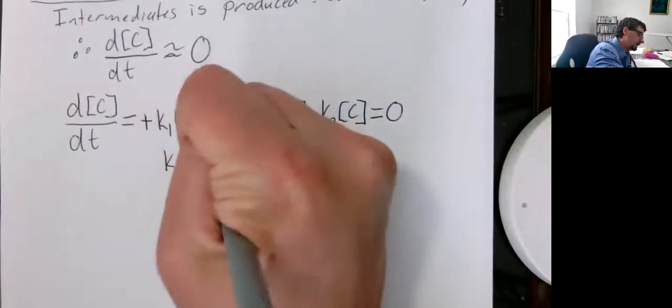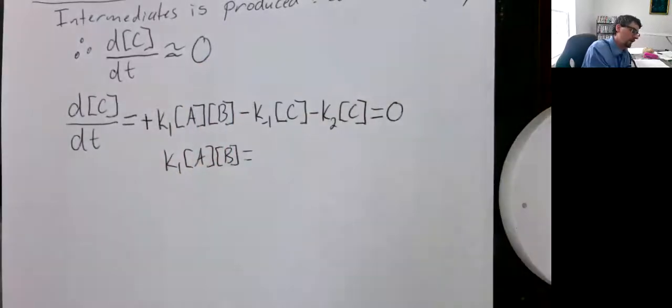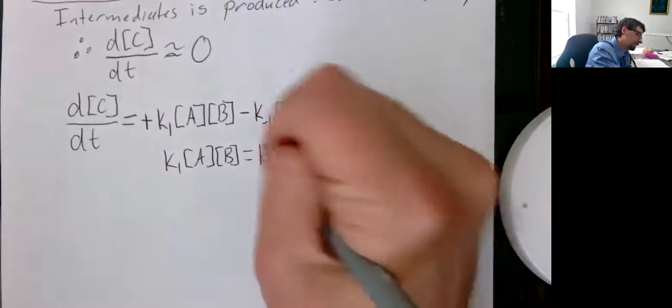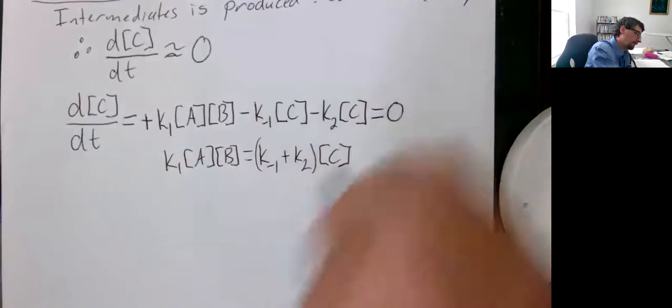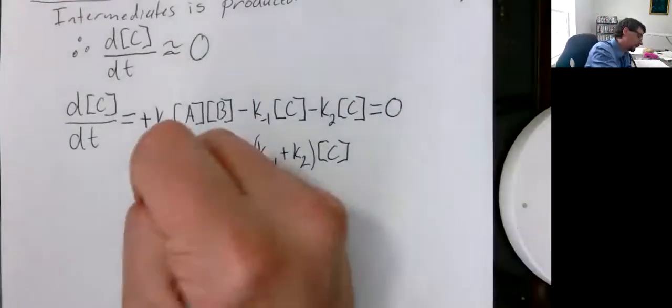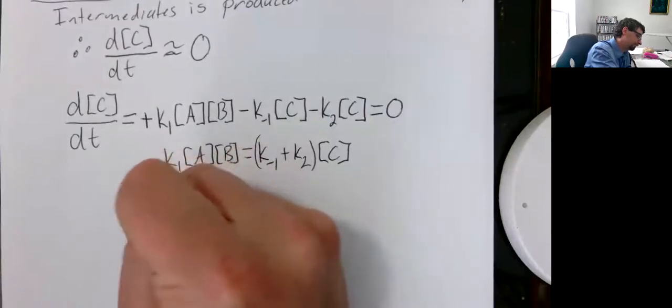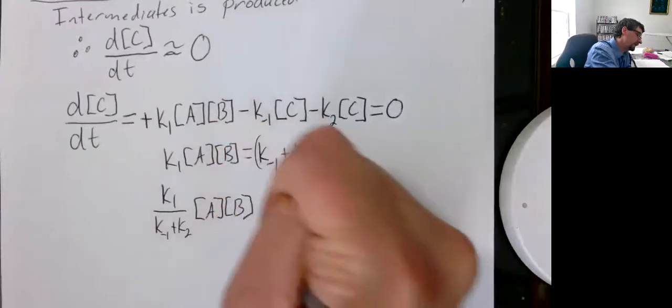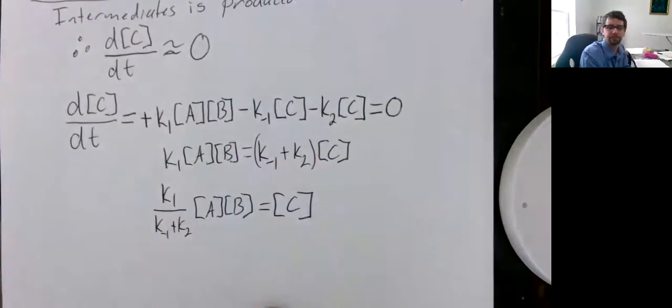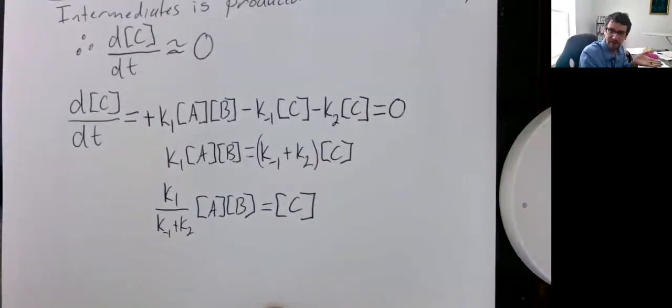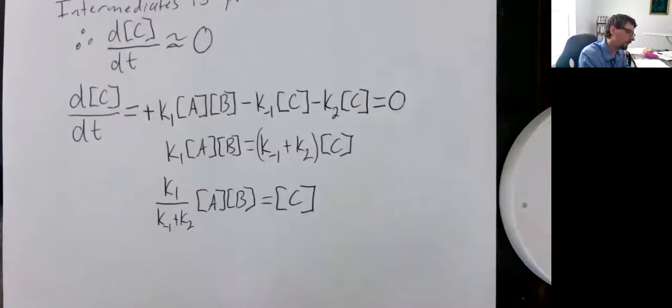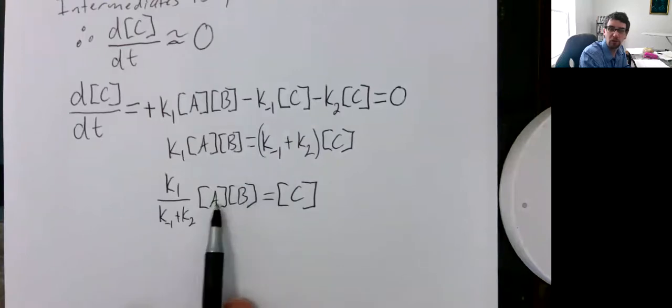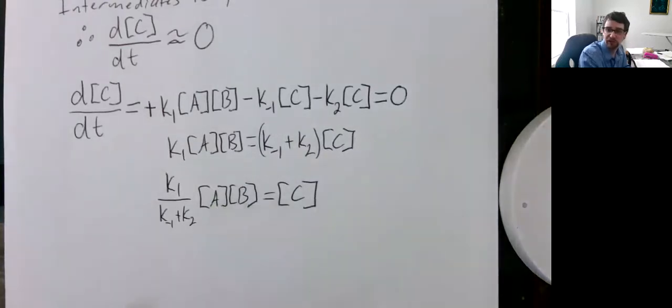We get K1 A B. We're going to move all the terms with C to the other side. We end up with K1 over K-1 plus K2 times A times B is equal to concentration of C. How does this help us out? Well, now we have a term for C that can be measured with our reactants, which are easier to keep track of than that intermediate.